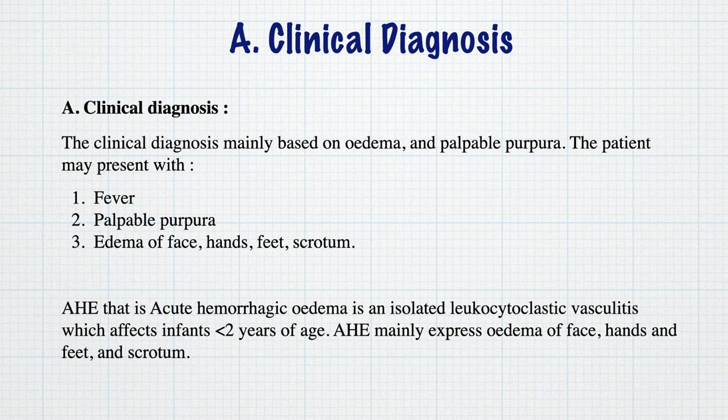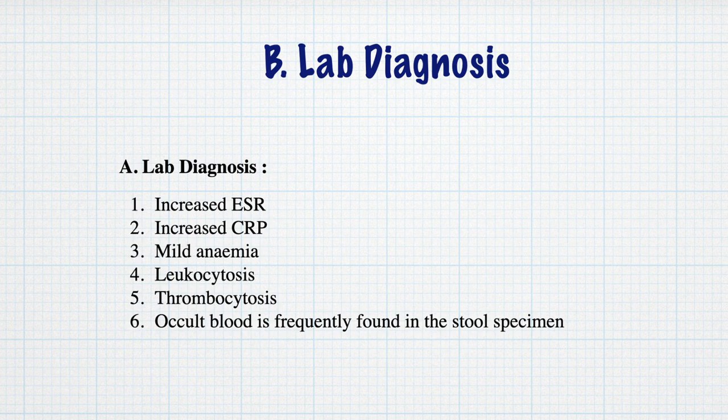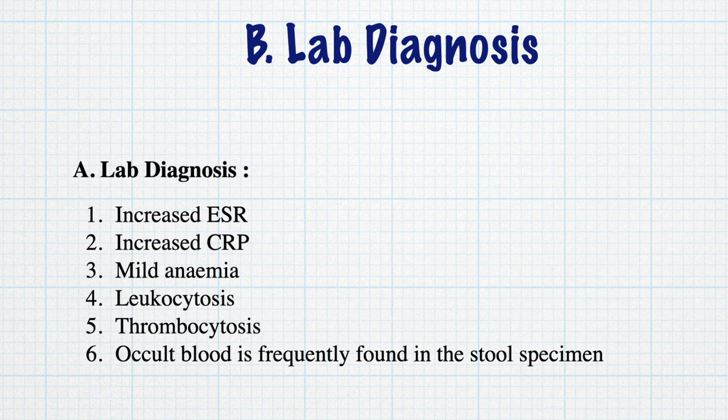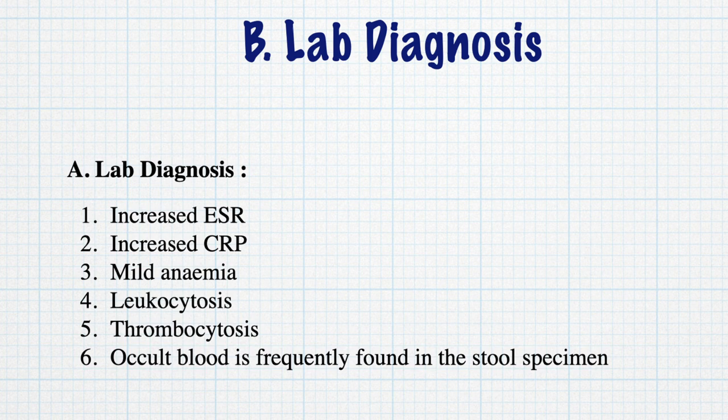Lab diagnosis can be established by the following values: increased ESR, increased CRP, mild anemia, leukocytosis, thrombocytosis, and occult blood is frequently found in the stool specimen.